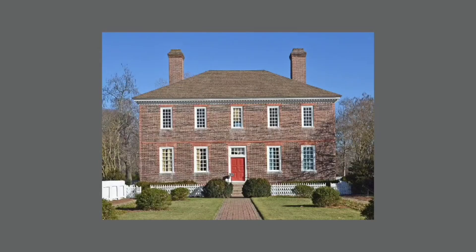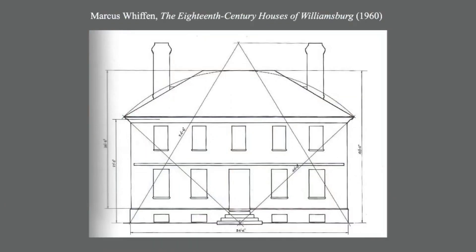We'll turn once more to the Wythe House. Except for its medallion cornice, the house is essentially devoid of ornament. It achieves its aesthetic quality mainly through its careful proportions. What at first glance appears as a simple facade is actually a complex essay in geometry.